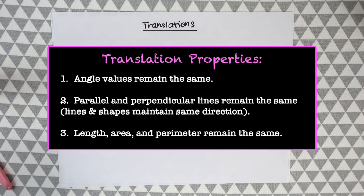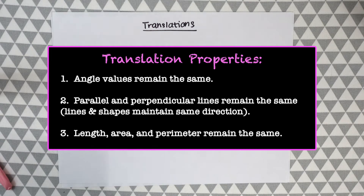Here are some properties of translations and rigid motion. When a shape, line, or point is translated, the shape retains rigid motion, meaning its length, area, and angles are unaffected by the transformation. The angle values remain the same, and parallel and perpendicular lines maintain the same direction — we're not flipping the shape (that would be rotation) or reflecting it. The length, area, and perimeter all remain the same.